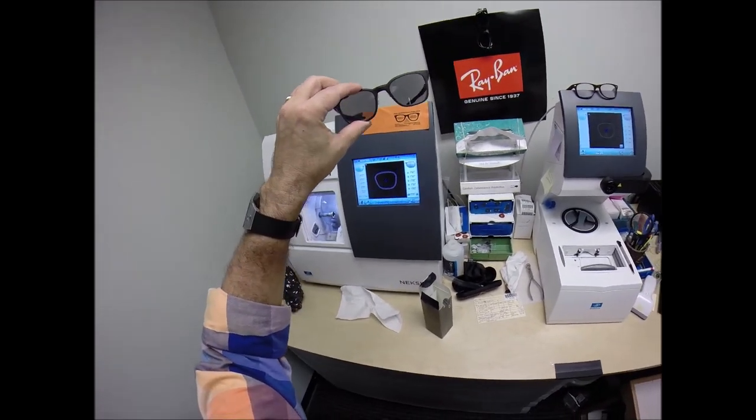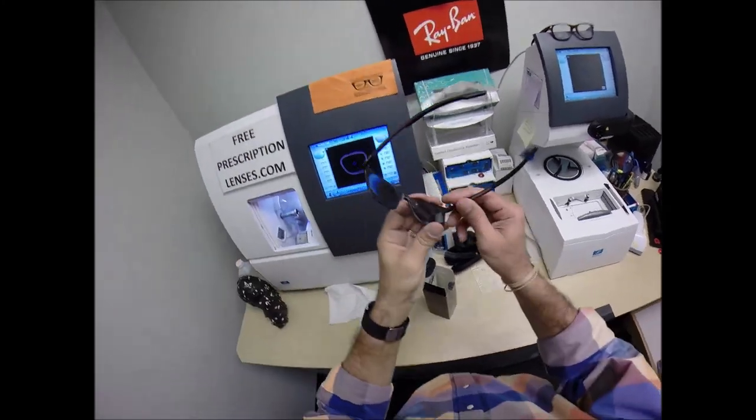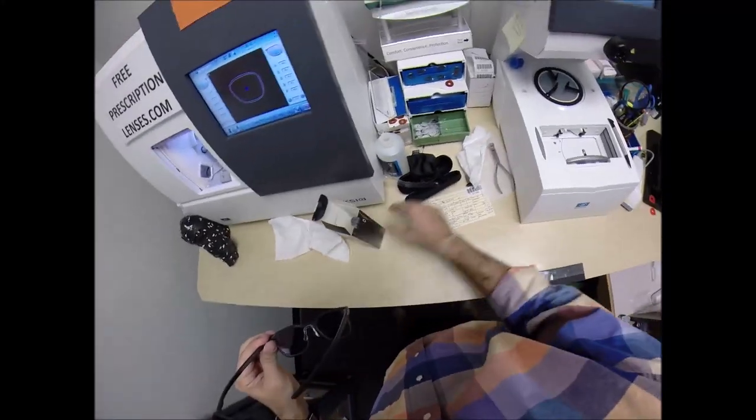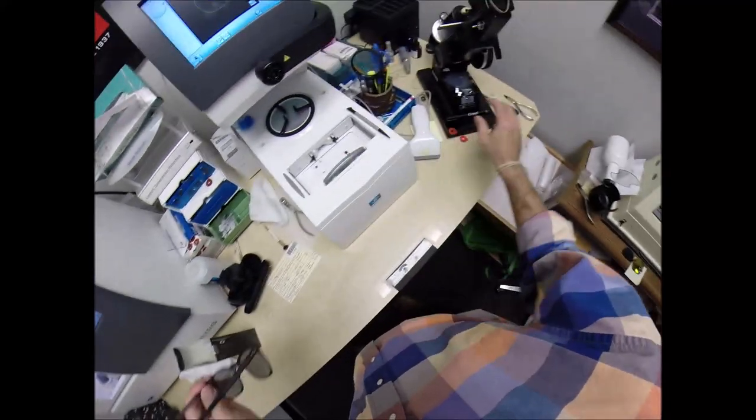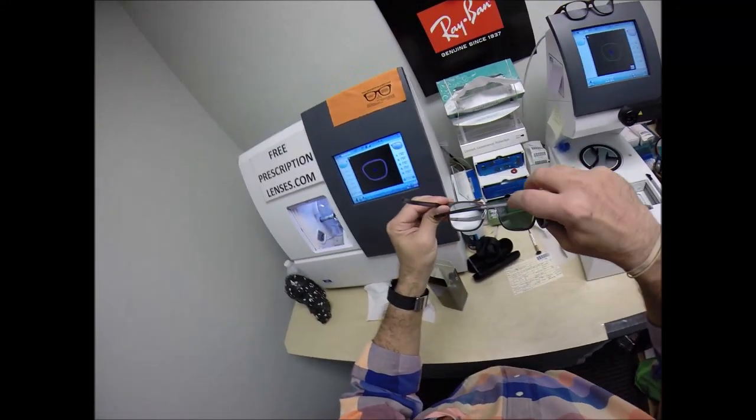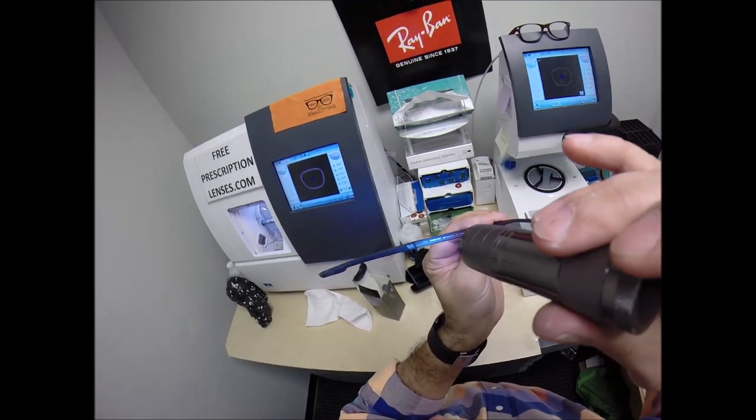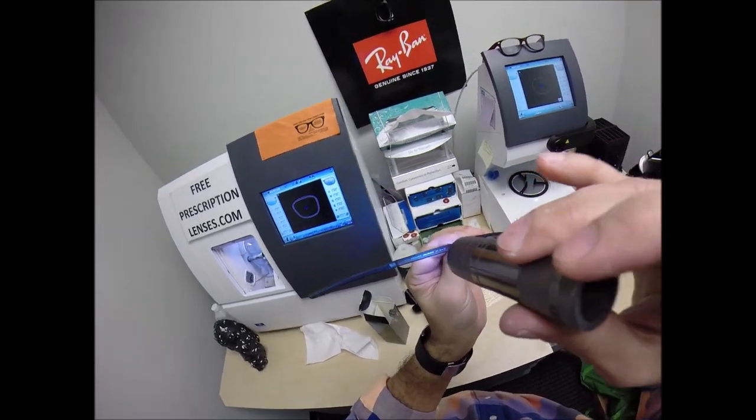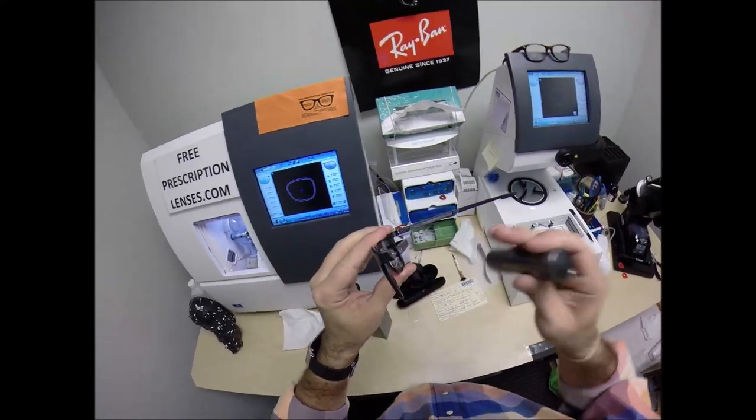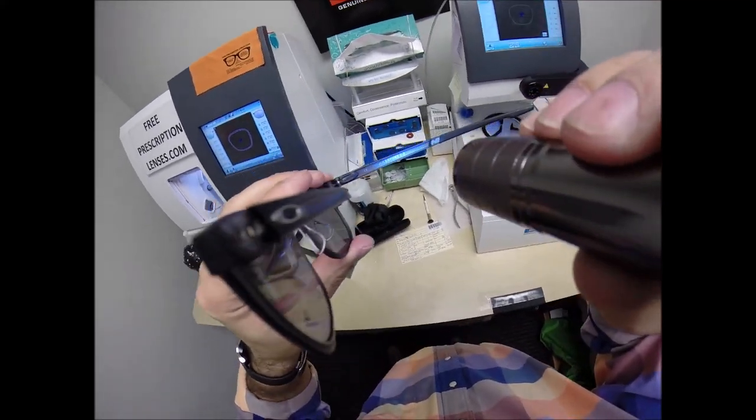So Jim and Fargo, North Dakota, I hope you enjoyed watching as I cut your invisible bifocal, your Essilor Ideal Advance with Transitions Gray for your Oakley 8093, color 02, which is the matte black ink in the 49 eye size. Again, this also is known as the Milestone 3.0.